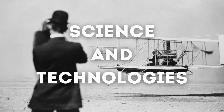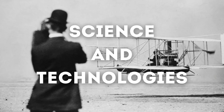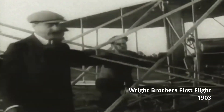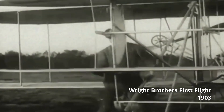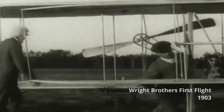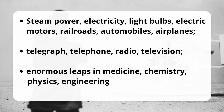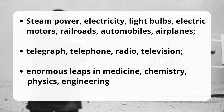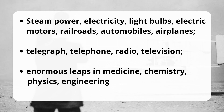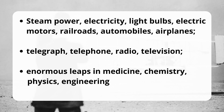Much related to the development of capitalism will be the theme of science and technology. Mankind made a tremendous leap in this area in the 19th and 20th centuries. The development of science and technology on the one hand pushed capitalism forward; on the other hand, capitalism itself demanded more and more technological advantages. Another significant driver of science and technology was the military industry, especially during World War I and World War II.